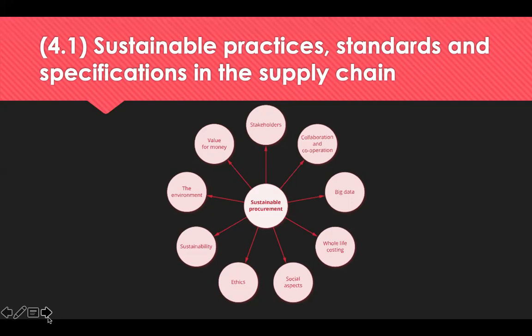Developing the procurement professionals of the future and amending specifications as needed are also important. The factors to be adopted for future sustainable procurement include: stakeholders, collaboration and cooperation, the use of big data and whole life costing, social aspects, ethics, sustainability, the environment, and finally value for money.